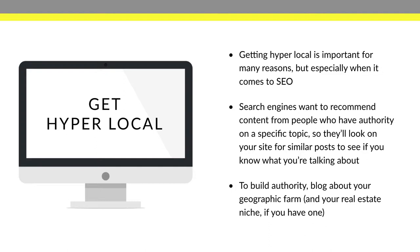For instance, if I'm using Palos Verdes as my city and horseback riding and equestrian topics are popular there, I would be writing about my geographic farm — Rancho Palos Verdes — and also blogging about horses. If horseback riding was my niche, I'd be writing about both of those, ideally together. That's how you start to really drill down on hyper-local content for a geographic farm and a niche.